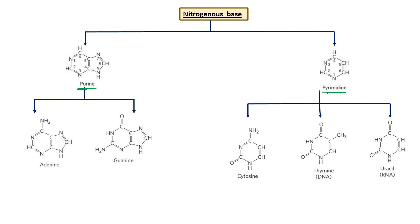Purine has two rings — it is bicyclic — while pyrimidine has only one ring. Understanding the ring structure is very important for further concepts. In purine, the six-membered ring contains nitrogen at positions 1 and 3, and the five-membered ring adds additional nitrogens. Pyrimidine is a single six-membered ring.